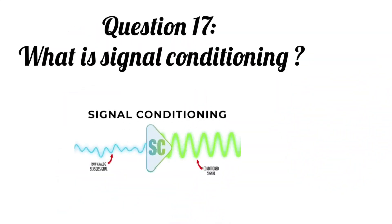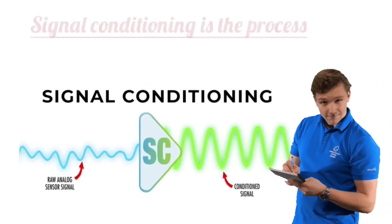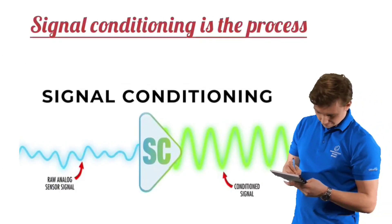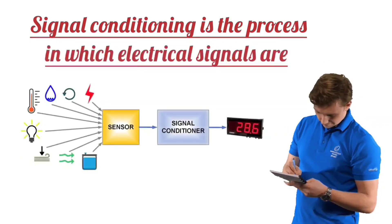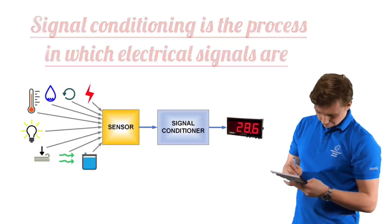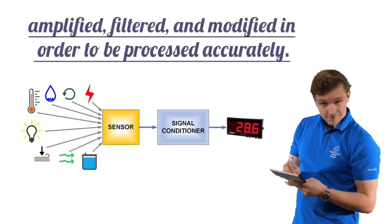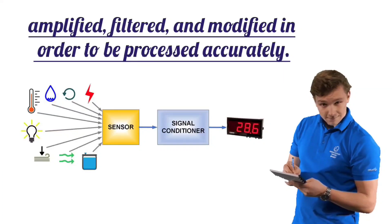Question 17: What is signal conditioning? Signal conditioning is the process in which electrical signals are amplified, filtered, and modified in order to be processed accurately.